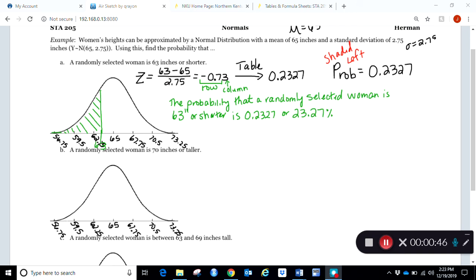So where does 70 go on my picture? Well, it's between the 67.75 and the 70.5, so we're roughly about here. And then the question is, am I going to shade above it or below it? Well, we got to read the problem: 70 inches or taller. So where are taller women? They are going to be to the right of that value.